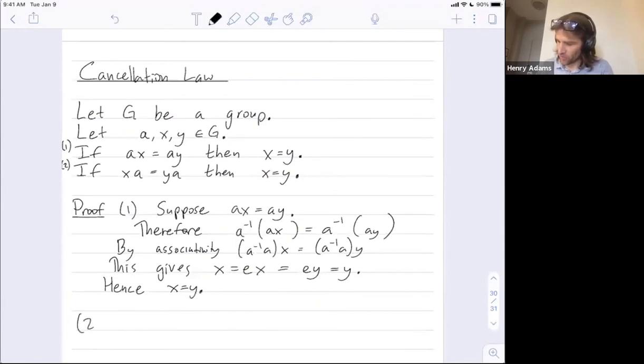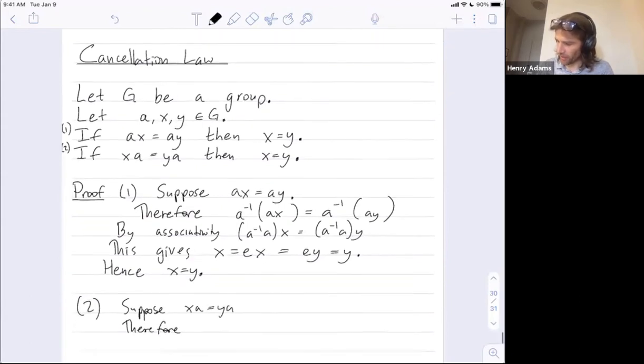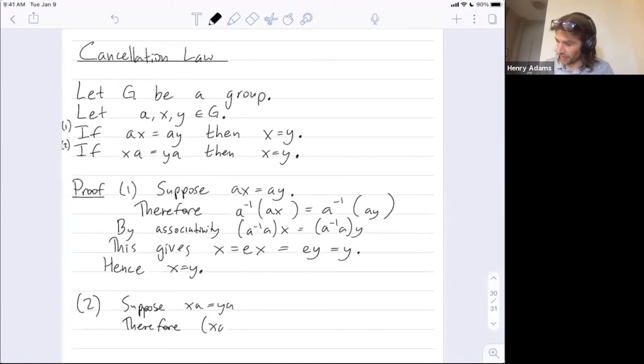Proof two, we won't do together, but I'll get you started. Suppose that x a is equal to y a. Therefore, now we're going to multiply by a inverse on the right to both sides. And it continues from there, although we won't write it out together. And maybe you can see how that would go to allow us to conclude that x is equal to y.